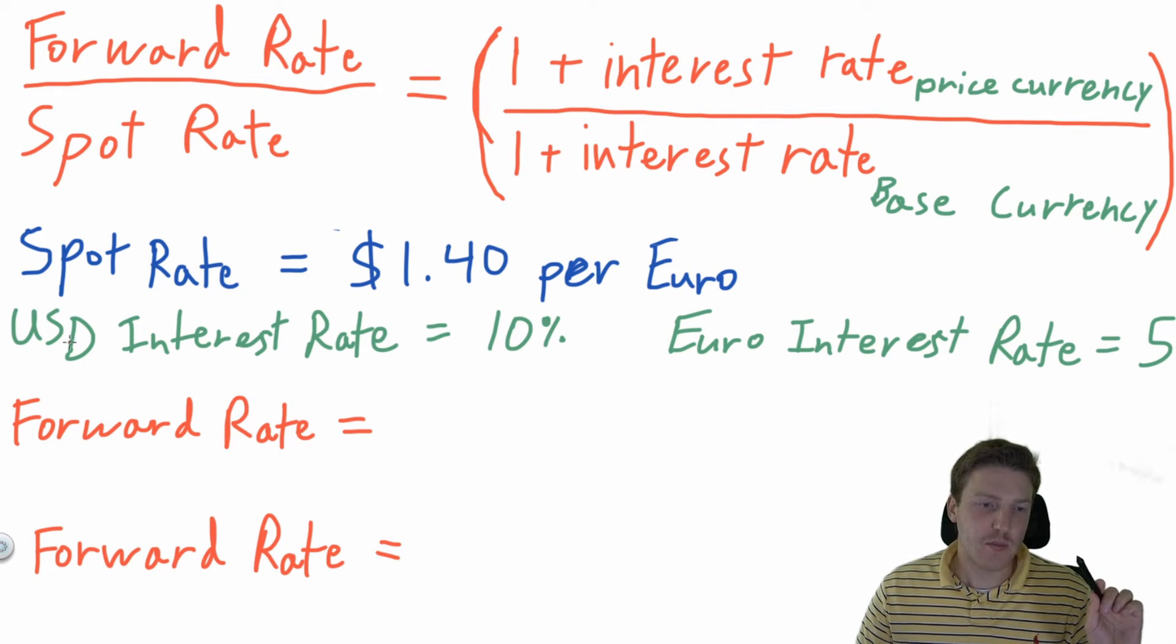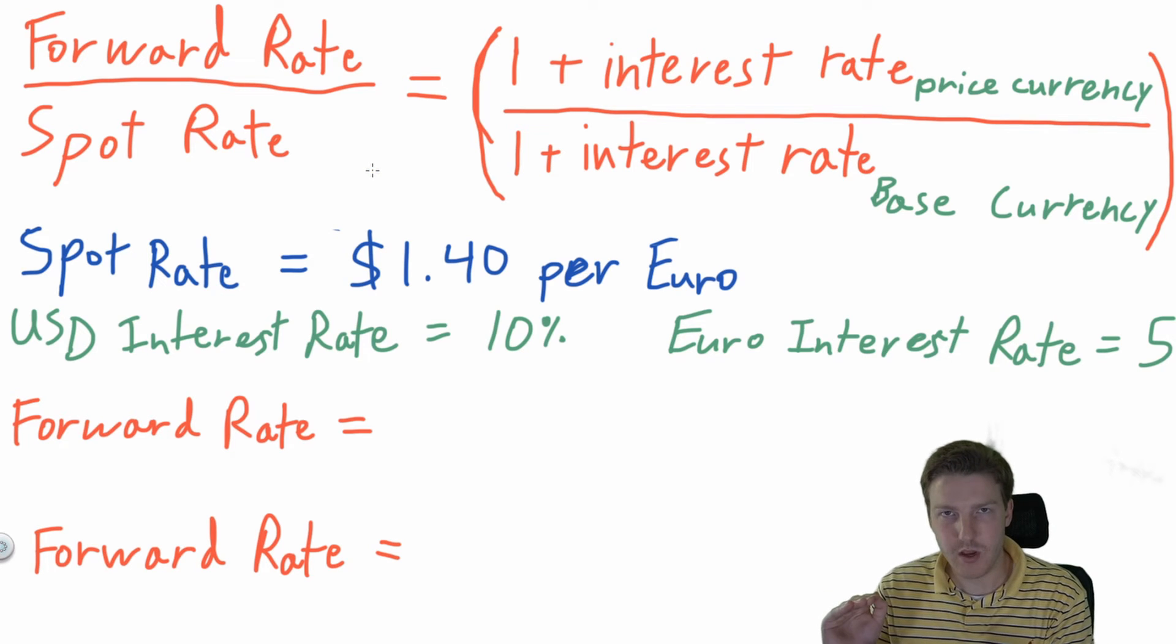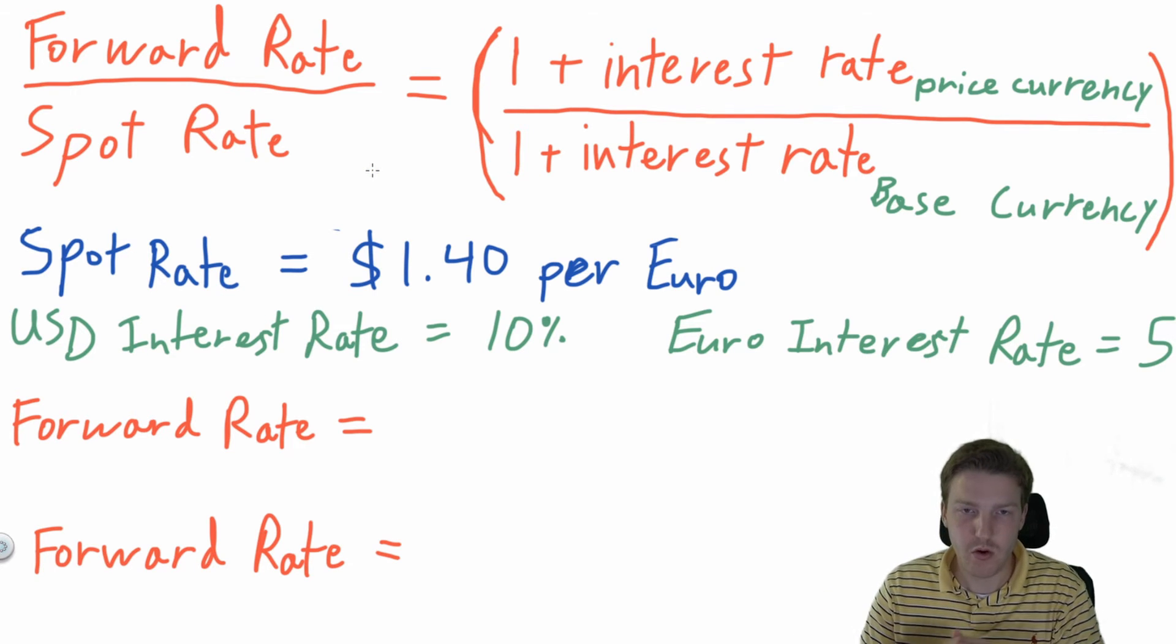Let's say hypothetically that the interest rate on the US dollar is 10% and the interest rate in the euro is 5%. Now let's work this formula to determine what would the actual forward rate be based on interest rate parity.